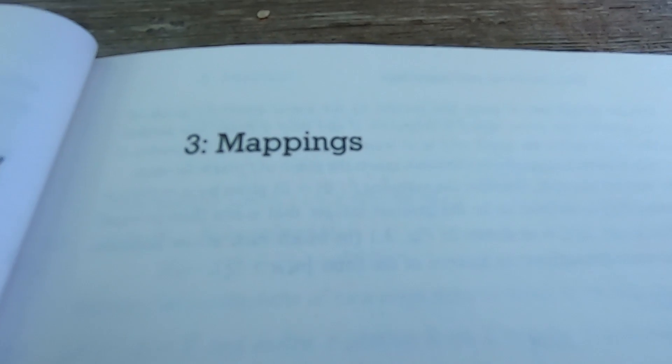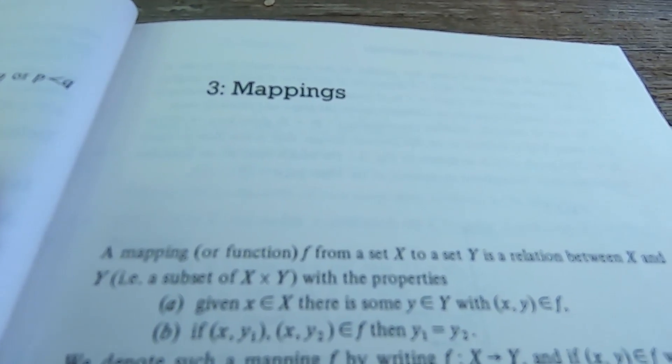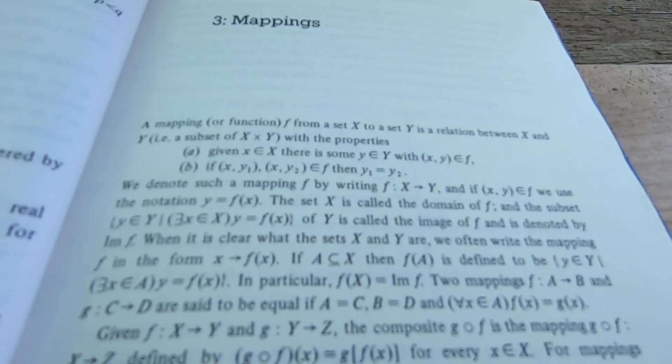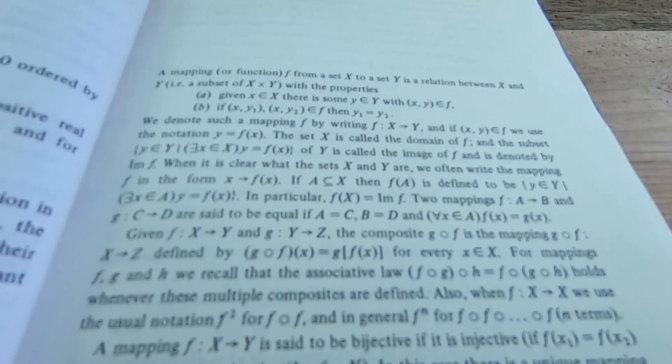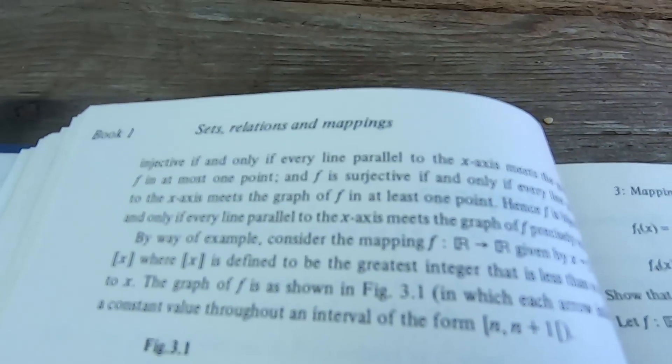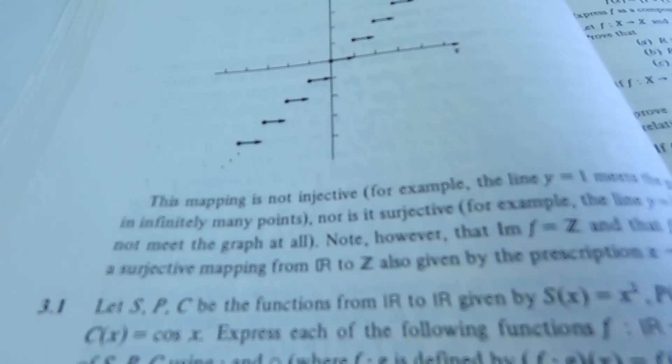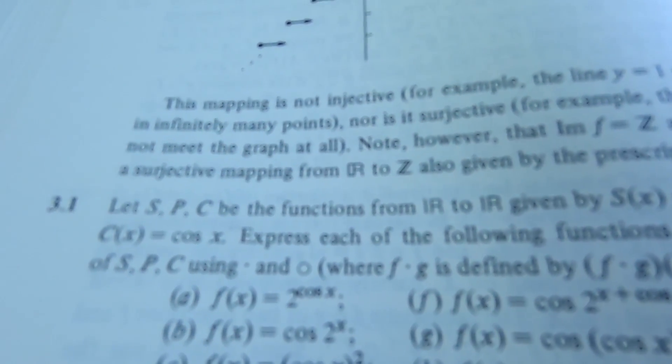The third section is probably the most useful section for math majors and anyone who wants to learn about functions. It's on mappings. OK, so it tells you the definition of a mapping and it goes through and defines everything. It defines the domain, the composition, surjectivity, injectivity, the image, bijectivity, the codomain. I mean, it just goes through all the definitions. Looks like it gives an example of the greatest integer function. And then it just jumps into the problems right away. Let's read the first one together. Let SPC be the functions from R to R given by, and they give you the functions. Express each of the functions in terms of SPC using multiplication and composition. Very nice. So a nice simple example to get you started.